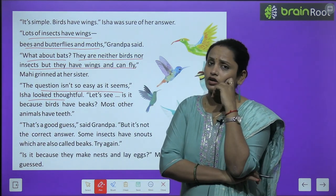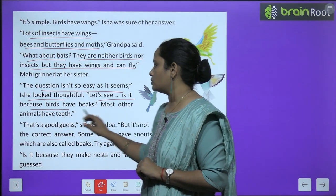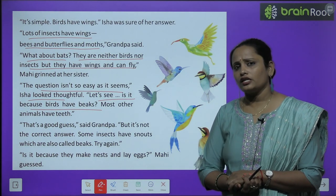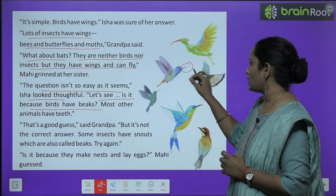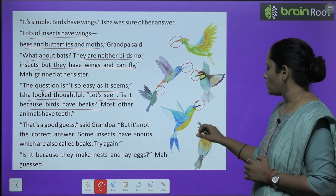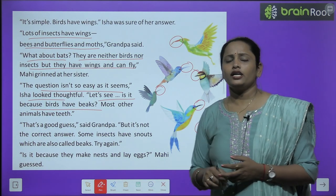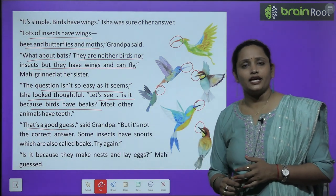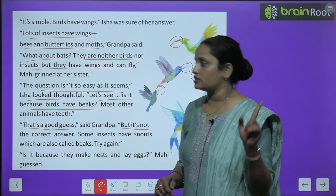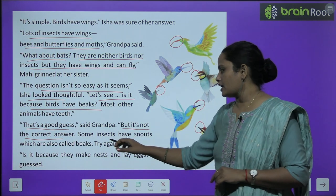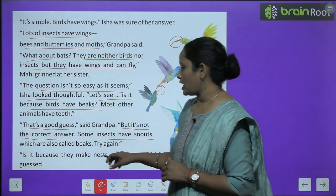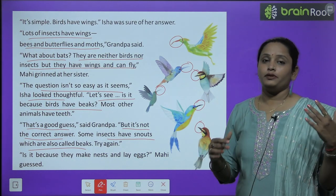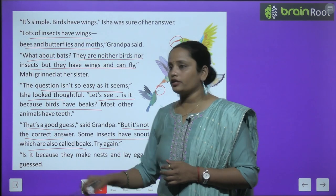अब Isha सोचने लगती है। Let's see, is it because birds have beaks? Most other animals have teeth. Isha ने सोचते हुए कहा कि birds के पास beak होती है और बाकी animals के पास teeth होते हैं। Grandpa ने कहा: that is a good guess, but it is not the correct answer. Some insects have snouts, which are called beaks — so you have to try again.